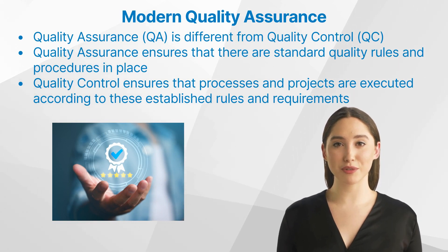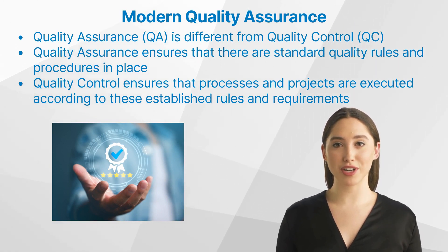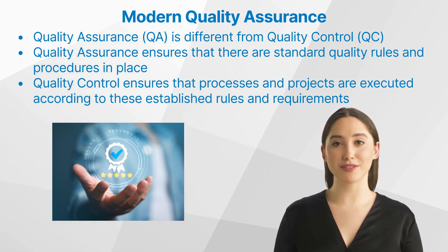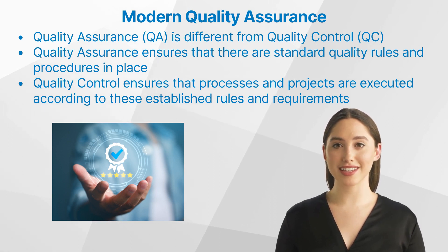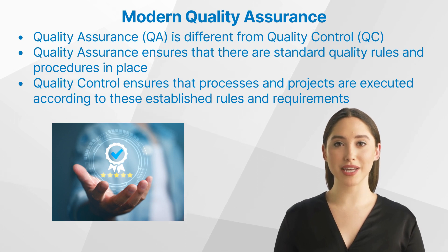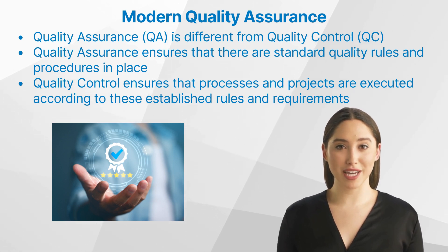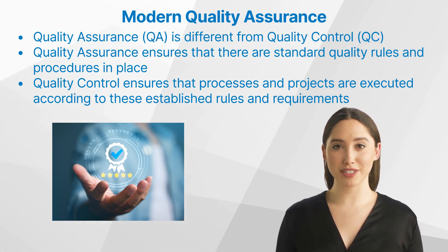Contrary to popular misconception, QA is different from quality control, QC. While quality assurance ensures that there are standard quality rules and procedures in place, quality control ensures that processes and projects are executed according to these established rules and requirements. Simply put, QA is the big picture and QC is the day-to-day execution.